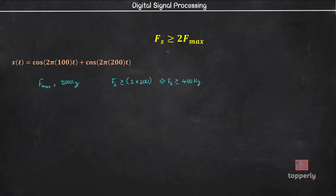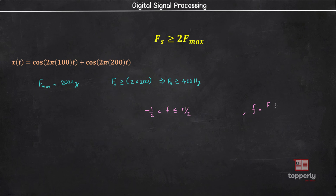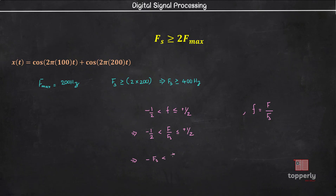On another note, we could reach this same inequality from our limits on the possible range for normalized frequency. We know that the normalized frequency f is equal to F, the frequency of the continuous time signal, divided by Fs, the sampling frequency. Therefore, this becomes minus half less than F/Fs less than or equal to plus half, or minus Fs less than 2F less than or equal to Fs. If you see, this is the inequality defined in the sampling theorem.